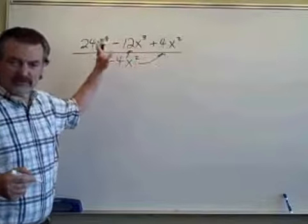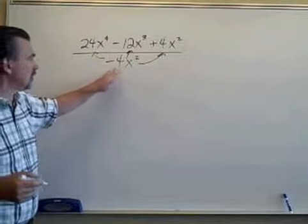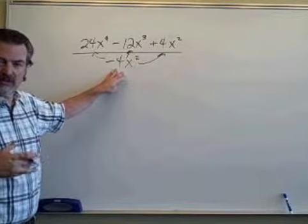So one at a time I'm going to take the terms of the trinomial and divide them by negative 4x squared.